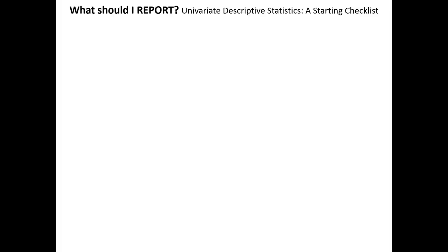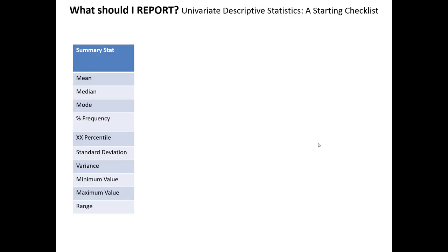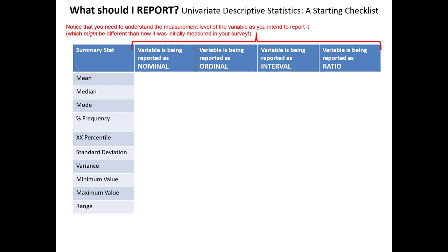One of the biggest challenges that people usually face when they're new to marketing research analysis is what they should report in terms of univariate statistics. This list here covers most of the most common summary statistics that we're interested in reporting — it's not completely exhaustive, but these terms should be familiar to you. We don't always want to report all of them for any given variable. Instead we need to understand whether the variable we're reporting upon is at the nominal, ordinal, interval, or ratio level. So measurement level becomes a very important issue as part of our analysis.